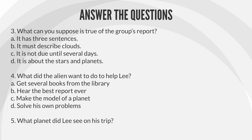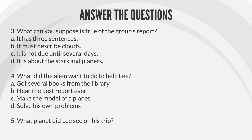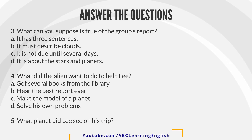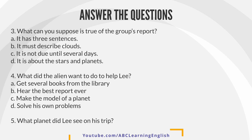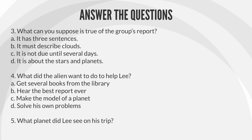Question 4: What did the alien want to do to help Lee? A. Get several books from the library. B. Hear the best report ever. C. Make the model of a planet. D. Solve his own problems.